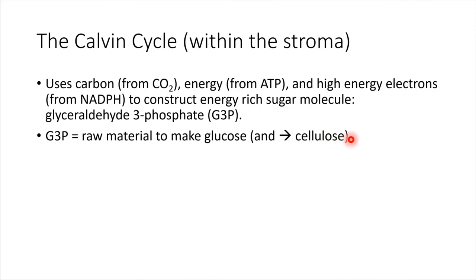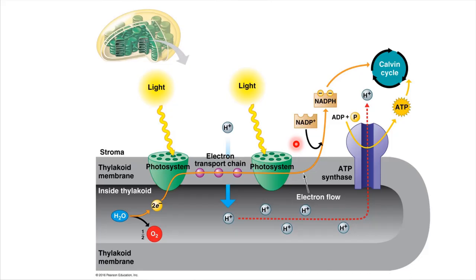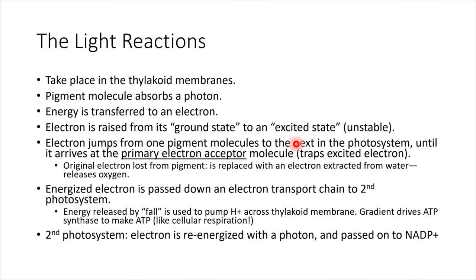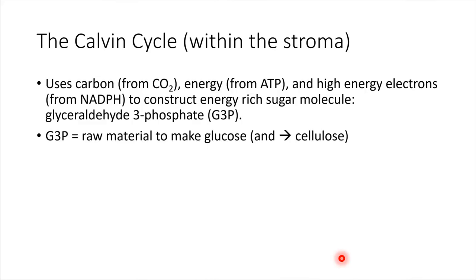The plant can connect glucose molecules together to form cellulose, which is the building material of the plant — this is what plant bodies and wood are made of. So in the end, two major things happen in photosynthesis: the light reactions take place, and then the Calvin cycle takes place. The end result is that the plant has built some sugar, such as glucose.